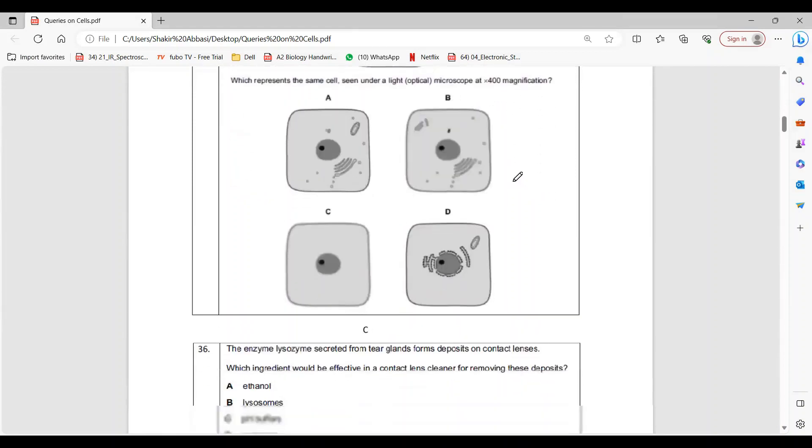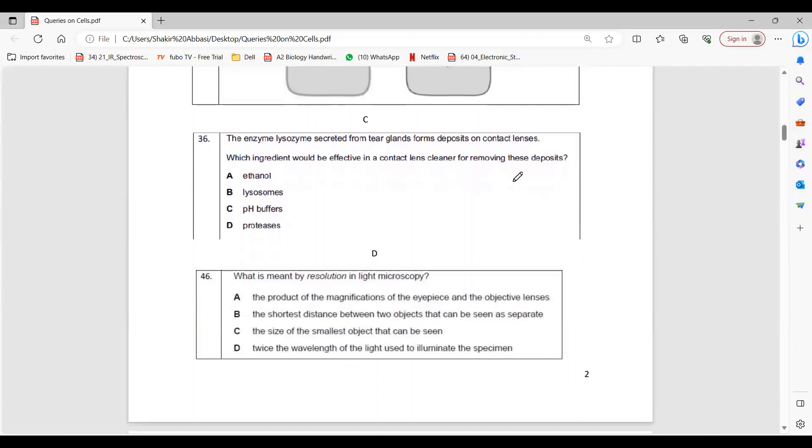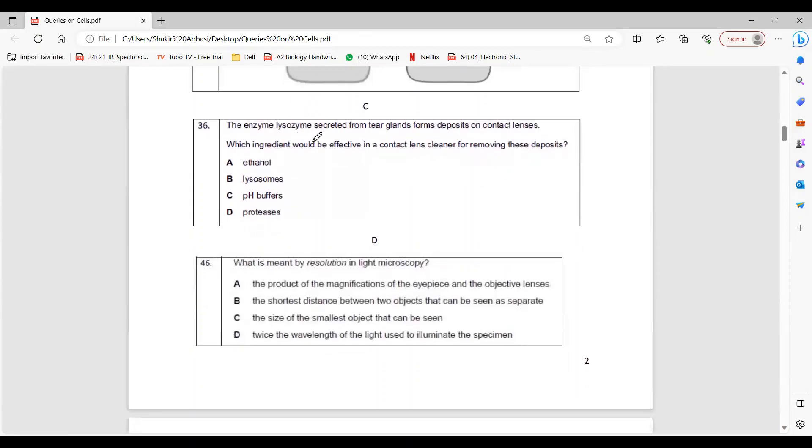So smaller objects cannot be seen by light microscope. So the correct option is enzyme lysozyme - this is an enzyme, so contact lens cleaner must be some proteases, so option D.